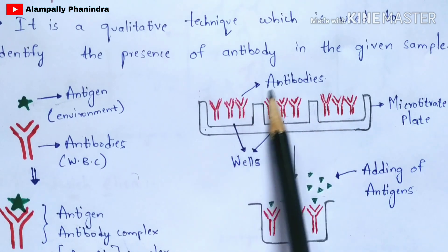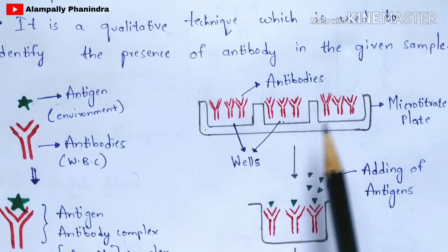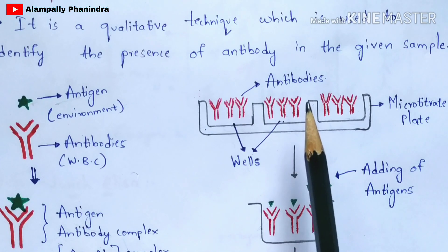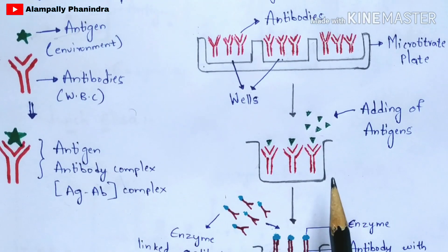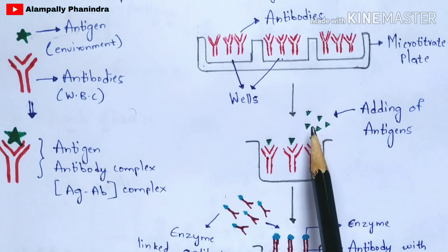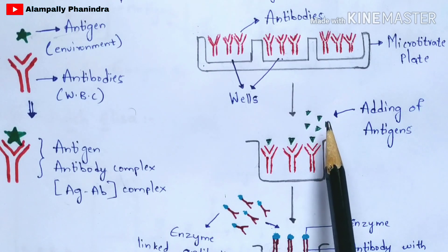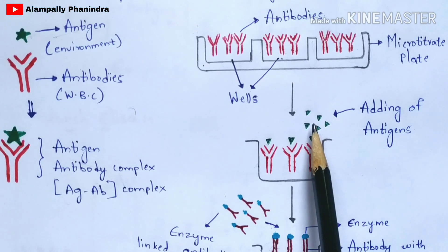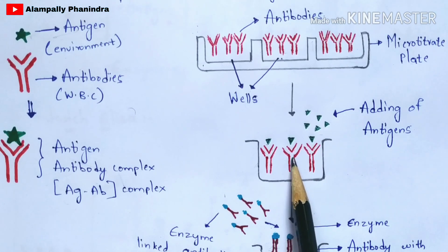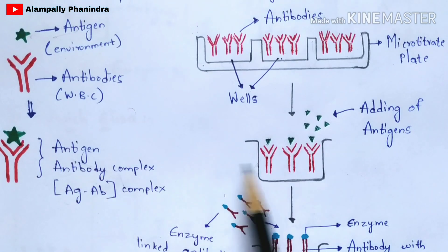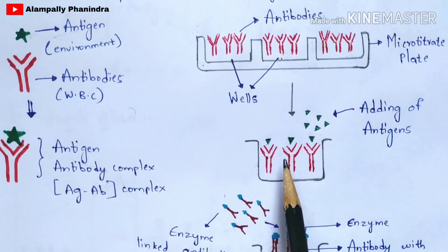The red-colored structures I have drawn represent antibodies. This is the first step of the ELISA test. In the second step, we add antigens — the triangle-shaped green structures — into the well. Once the antigens are added, the antibodies start receiving the antigens and antigen-antibody complex formation occurs.